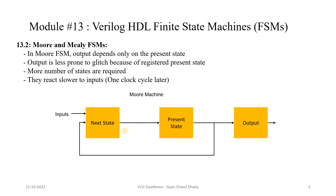Now let's see the different types of Finite State Machine used in Verilog. There are two types: the first is the Moore Finite State Machine and the second is the Mealy Finite State Machine.